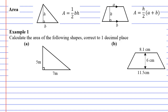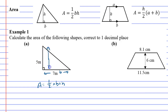In this one we've got a triangle and a trapezium with the formulas above it. We'll start with the triangle. Using the formula: area equals a half times base times height, or half BH. Base is your line at the bottom, and height represents the vertical height of your object. H is 5 and B is 7, so we're going to go half times 7 times 5.